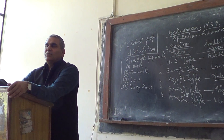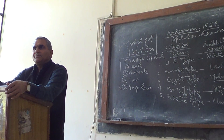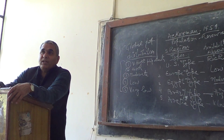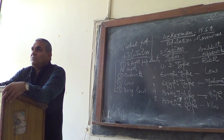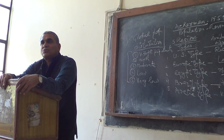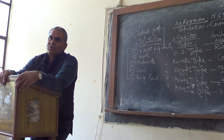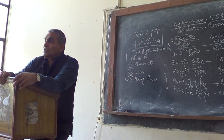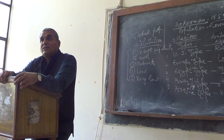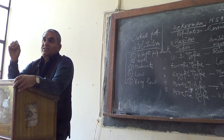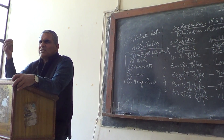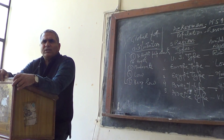Antarctica is a full continent — a complete landmass — free from human habitation. Not even one citizen lives there because the climate is so harsh and it is permafrost. However, it is full of mineral resources and rich in fisheries. Krill — K-R-I-L-L — is a small, nutritious fish found there that is full of protein.